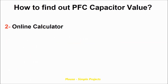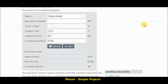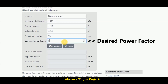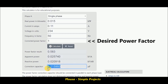The second way to find out the capacitor value for power factor correction is by using online calculators. You can find the link to this calculator below in the description. You have to insert the power of your load in kilowatts, and also insert the voltage, current, and power factor. As you can see, the capacitor value comes out to 1.2 microfarads, which is the same as I calculated before.